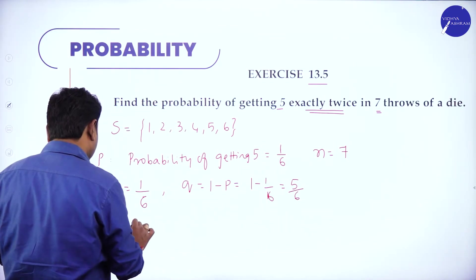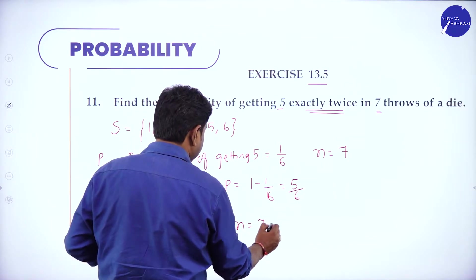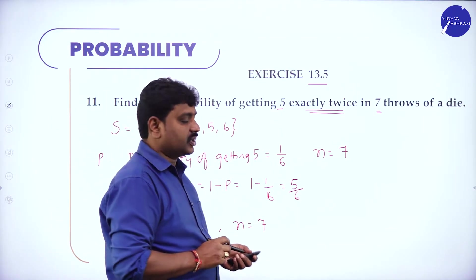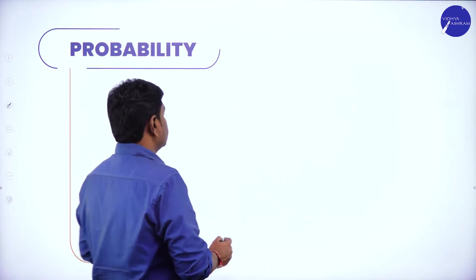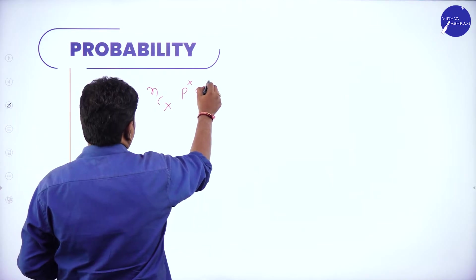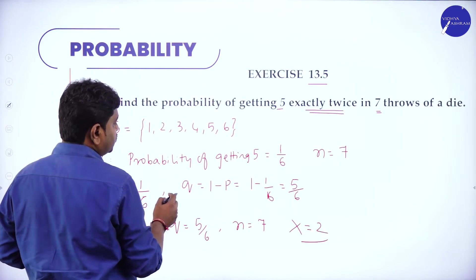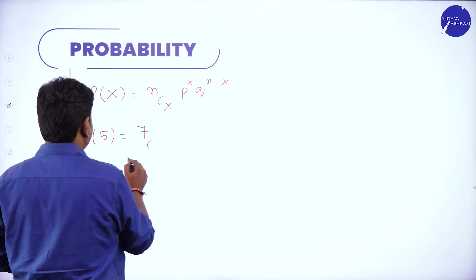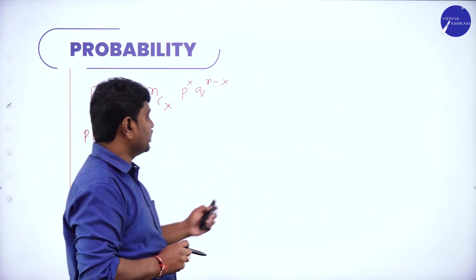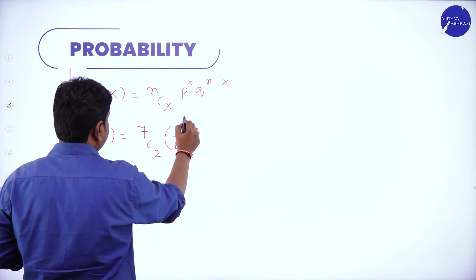So now p = 1/6, q = 5/6, number of trials n = 7, and they want the probability of getting 5 exactly twice, so x = 2. The formula is P(x) = nCx * p^x * q^(n−x). So P(2) = 7C2 * (1/6)^2 * (5/6)^(7−2).